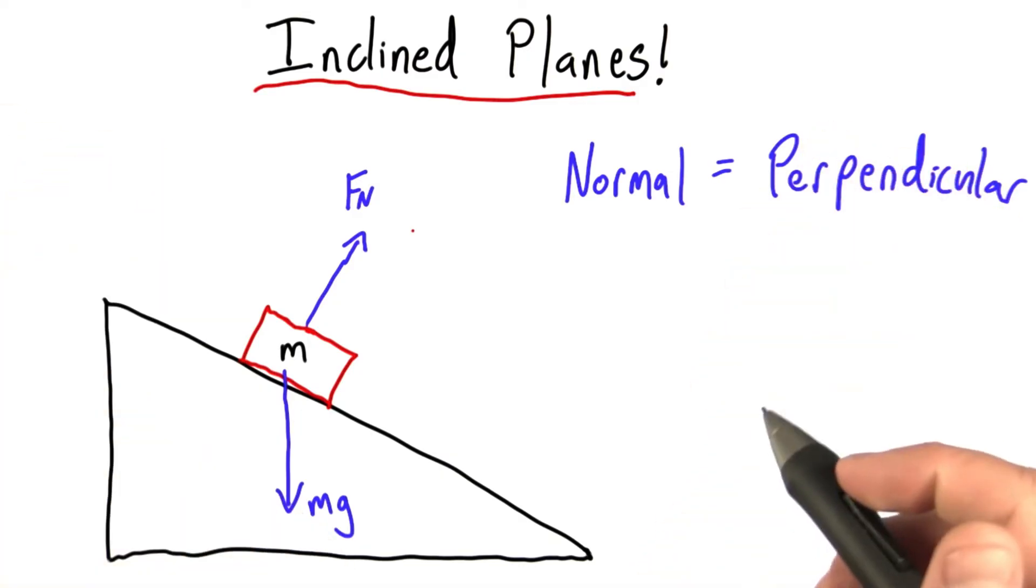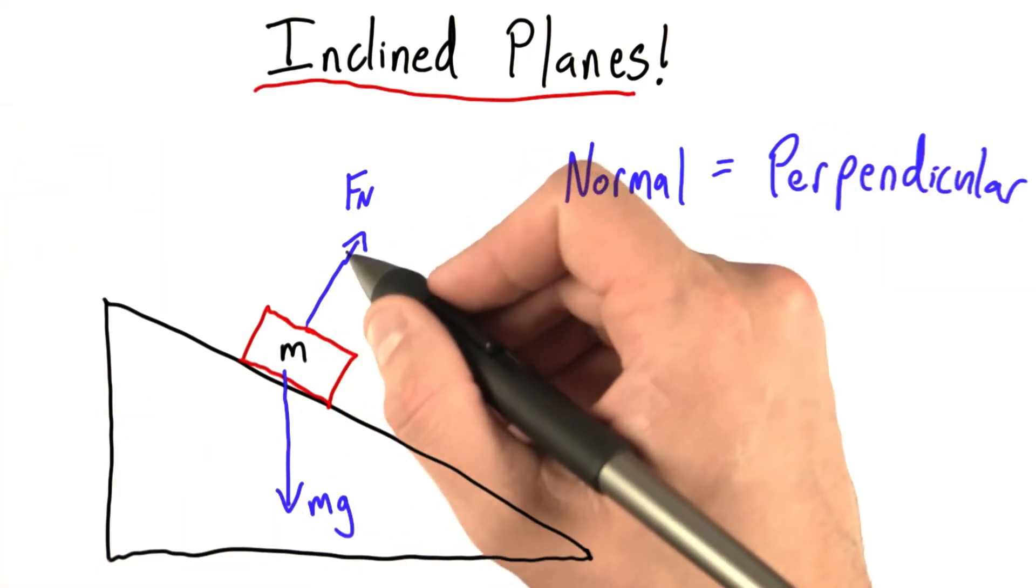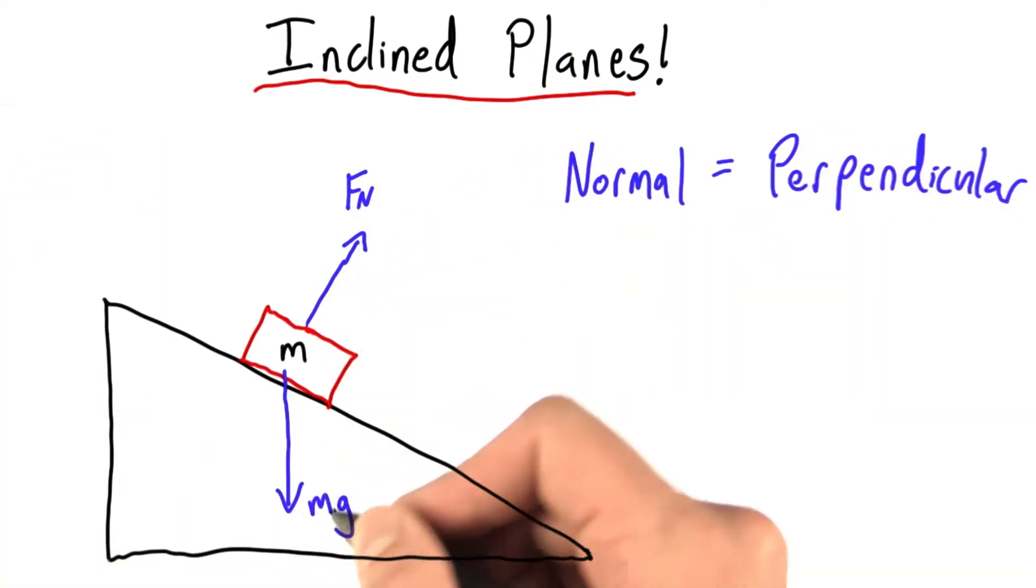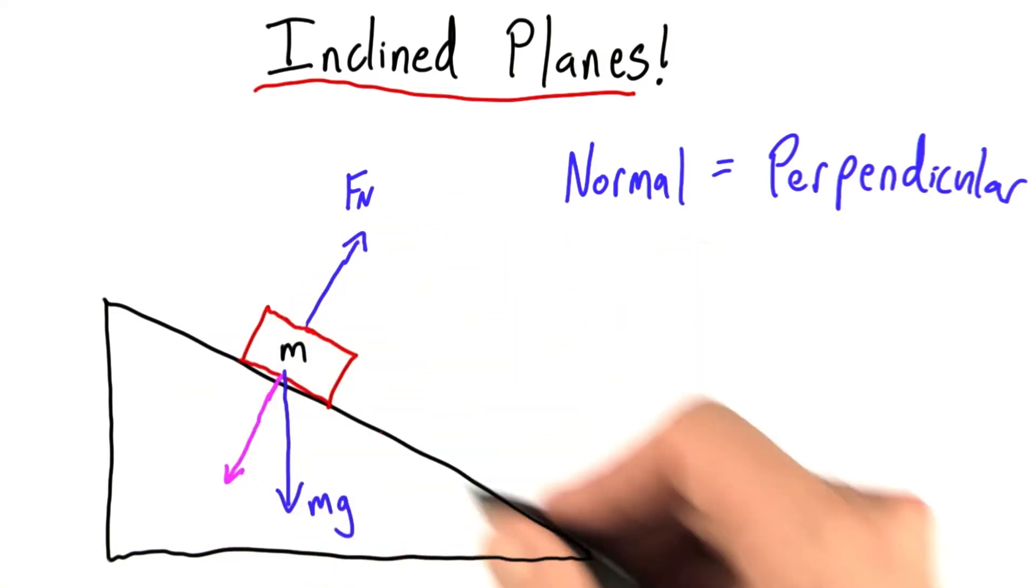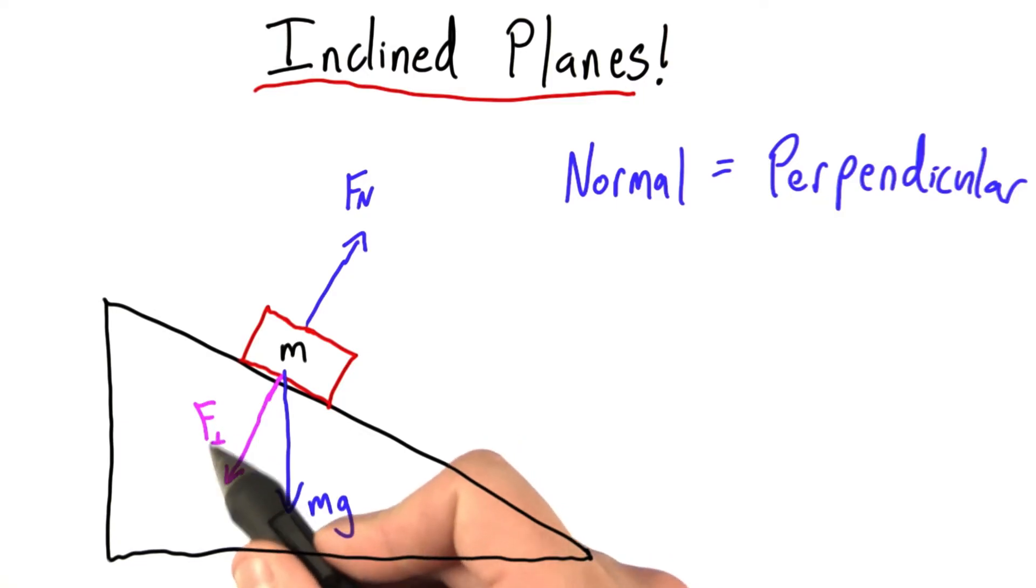So that's the direction we should care about. And how do we care about a direction? Well, instead of breaking this force down, we break the weight down. We replace this downwards force with a force perpendicular to the surface, which I've indicated with this little perpendicular symbol here, and a force parallel, which I've indicated with these two parallel lines.